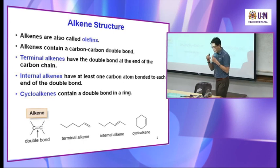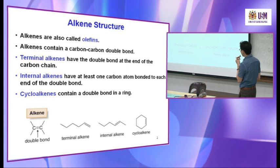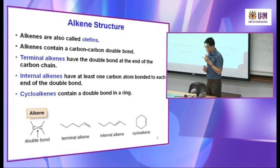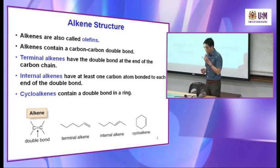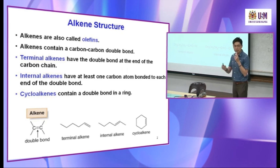Alkyne contains a carbon–carbon triple bond. A terminal alkyne has the triple bond at the end of the carbon chain, where a hydrogen atom is directly bonded to a carbon of the triple bond. This H bonded to C at the end is called a terminal alkyne.